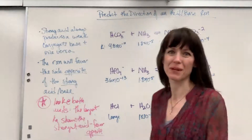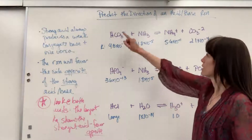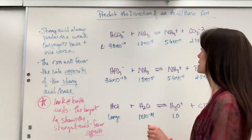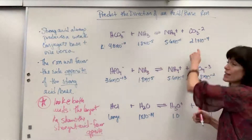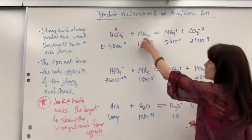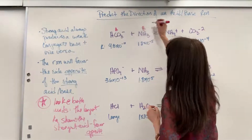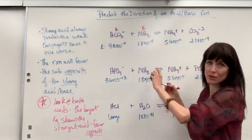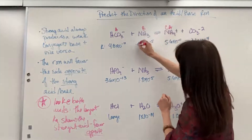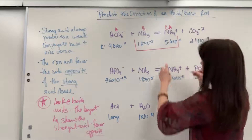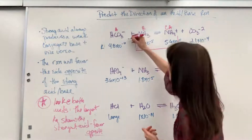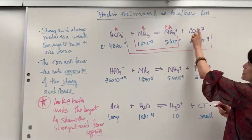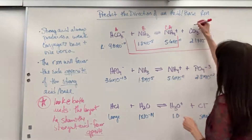We have hydrogen carbonate plus ammonia producing ammonium and a carbonate ion. Let's label everything. The hydrogen carbonate is going to donate, so this is my acid. The ammonia is going to accept that hydrogen, so there's my base. Going in the reverse direction, the ammonium donates a hydrogen — that's my conjugate acid. The base always produces a conjugate acid and the acid always produces that conjugate base.